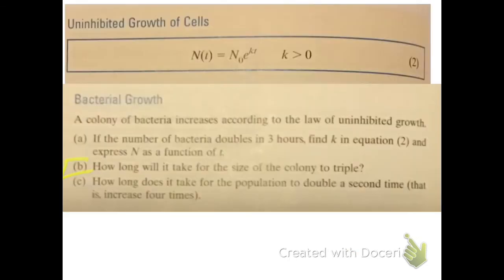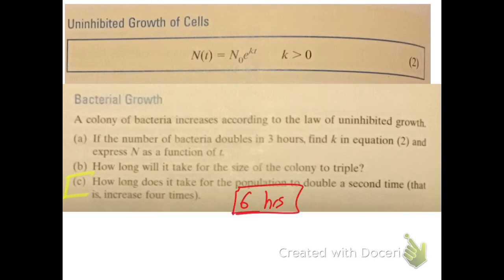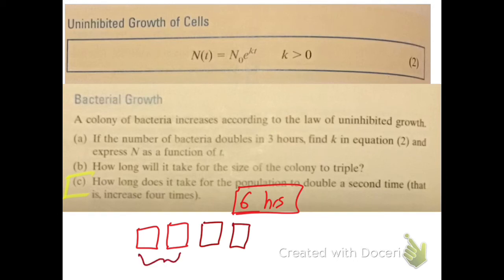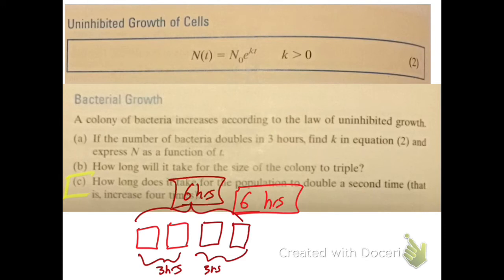The last part asks: how long will it take for the population to double a second time, meaning it has increased four times? If the bacteria doubles in three hours, it will double again in six hours total. The idea is that if it takes the original population three hours to double once, it takes three more hours to double again — so six hours total to reach four times the original amount.